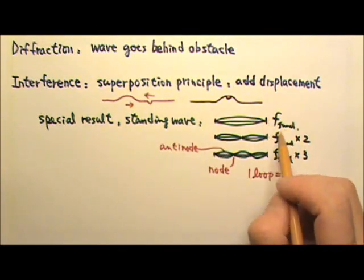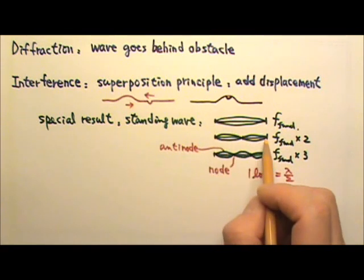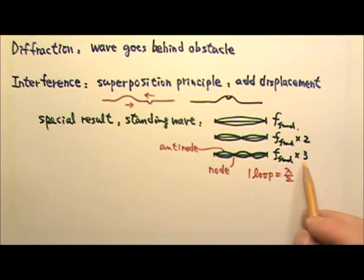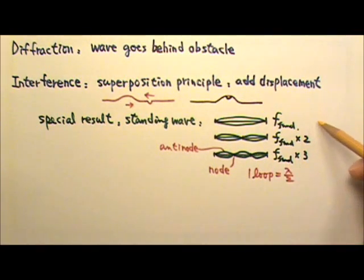Two loops is the fundamental frequency times two. Three loops is the fundamental frequency times three. This is also called the first harmonic, second harmonic, third harmonic.